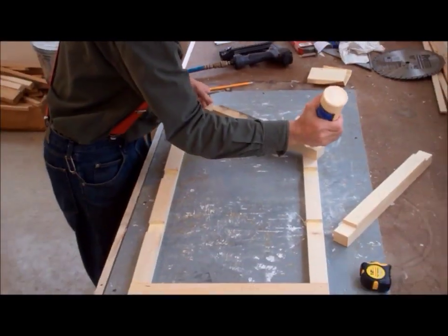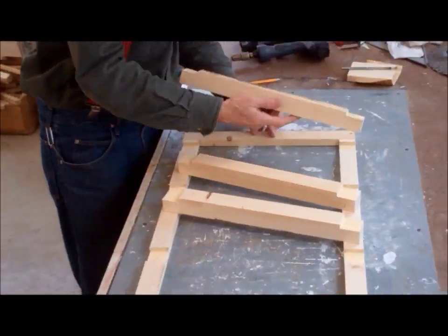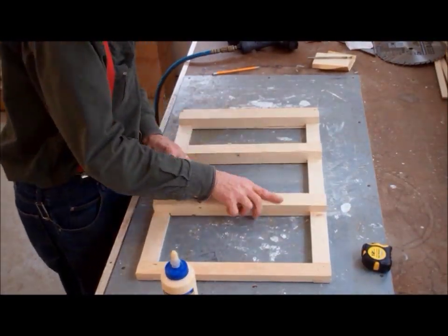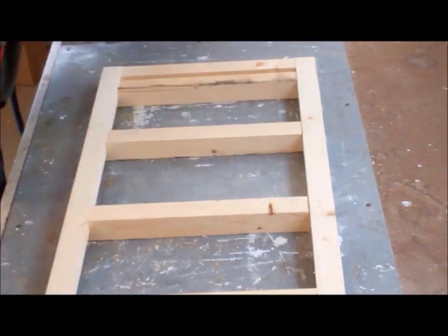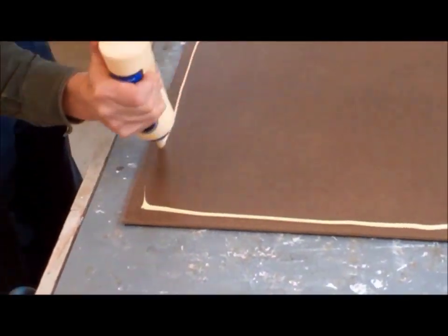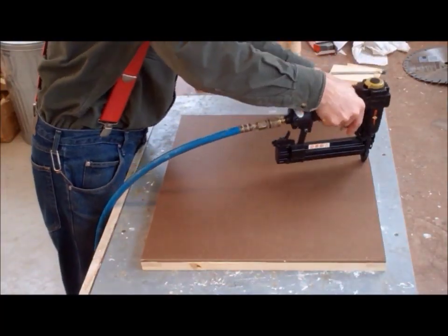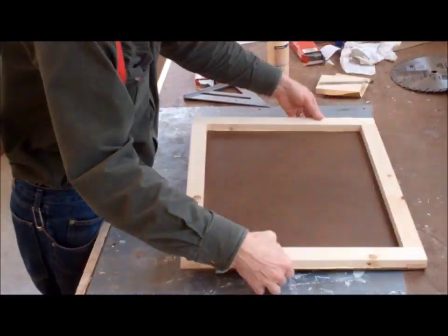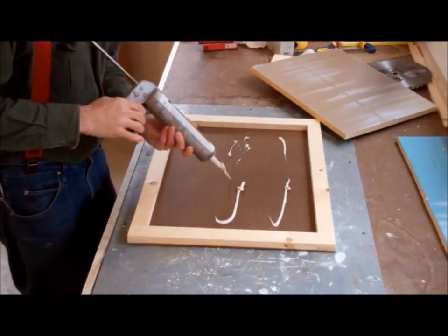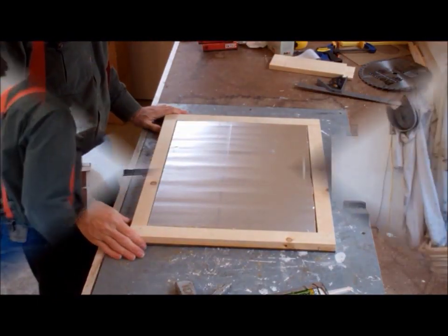The shelf brackets were attached by also gluing and nailing. Quarter inch hardboard was cut to the size of the six frames and attached by glue and brads. Finally foil face foam was used to line the inside of each panel.